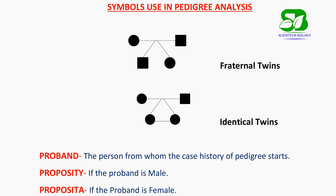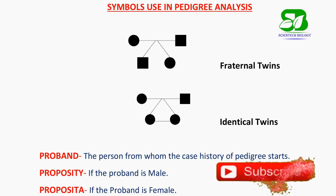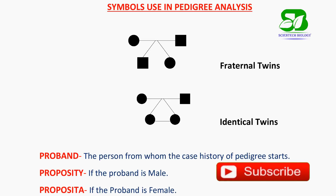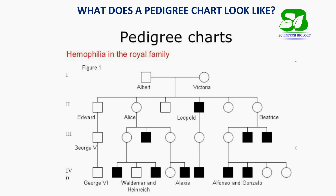In the pedigree, the person from whom the case history starts is called the proband. If the proband is male, it is called propositus. And if the proband is female, it is called proposita.